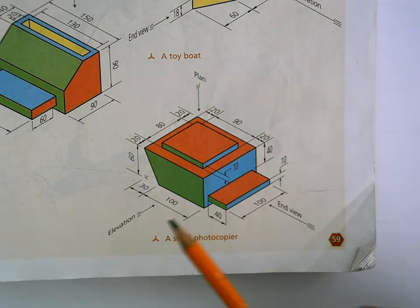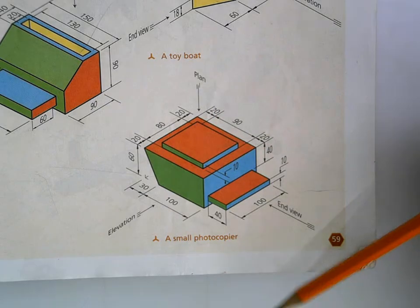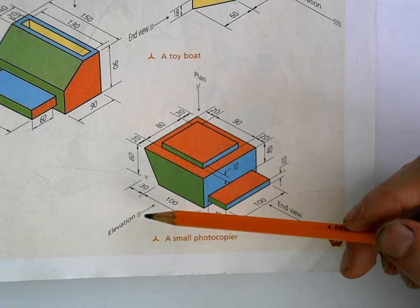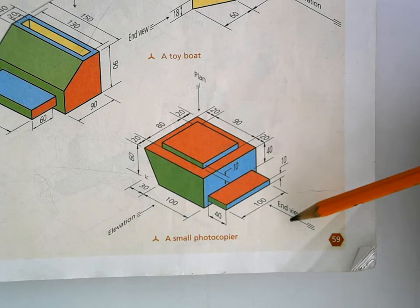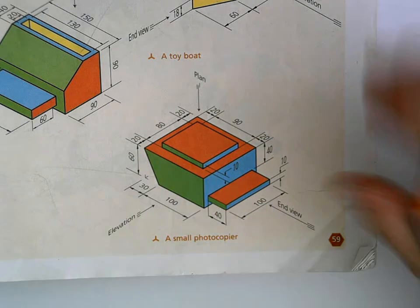Right, so we're going to draw the three views of this: the elevation, the end view and the plan view. It's labelled up which direction they want us to look in. Your elevation is basically your front view, your end view is a side view, and your plan view is if you're looking down from a bird's eye view, you're looking down on top of the object.